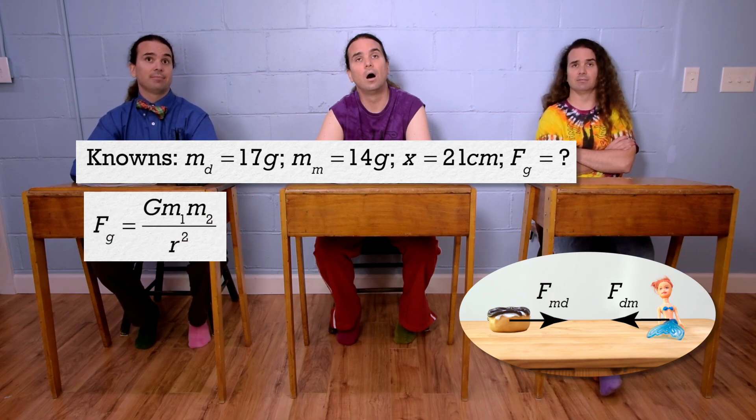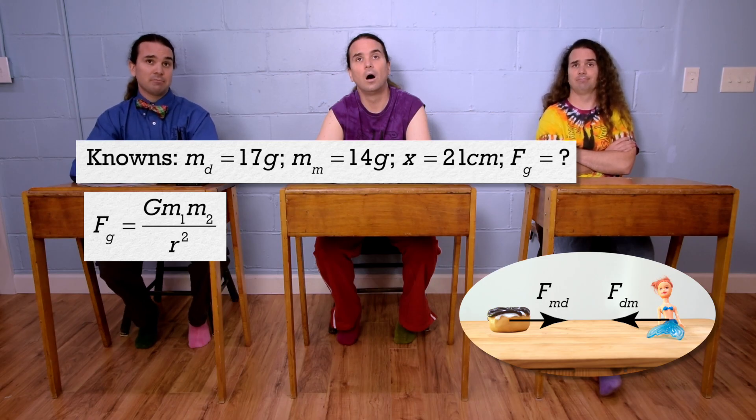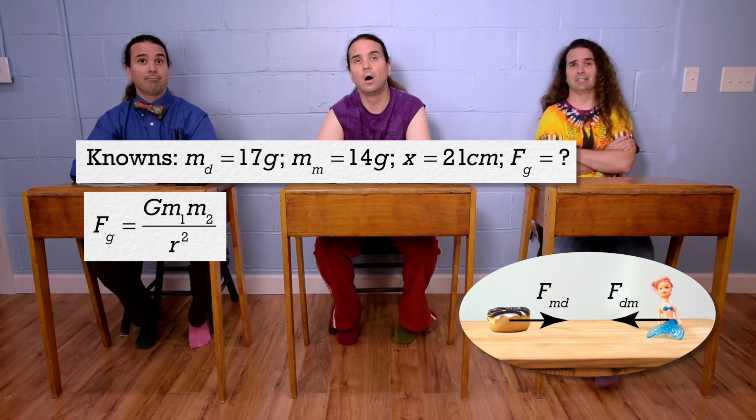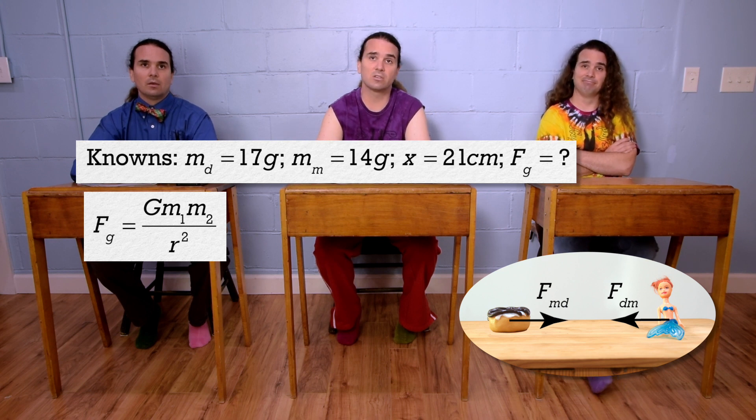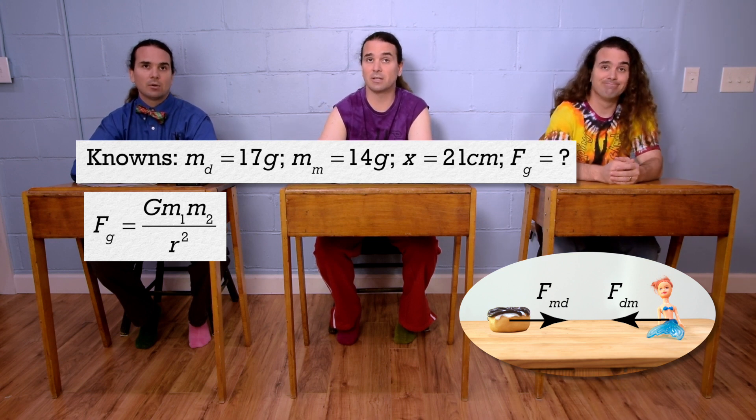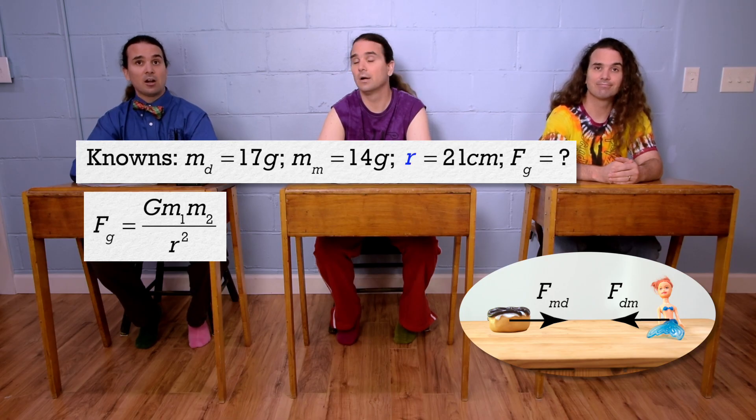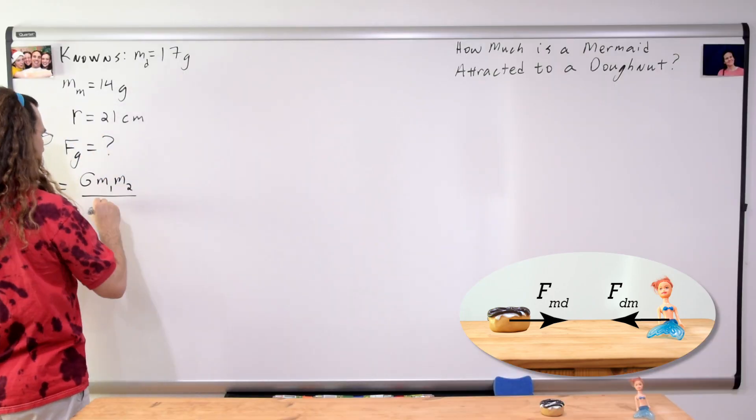Which is force of gravity equals big G, the universal gravitational constant, times mass one times mass two all divided by r squared. Mr.p has made it pretty clear we should not just say the letters, we should say what they mean. You should say radius and not r. Actually, in this equation, r is not the radius. R is the distance between the centers of mass of the two objects. Right, so that 21 centimeters should be labeled r, not x. Very nice.